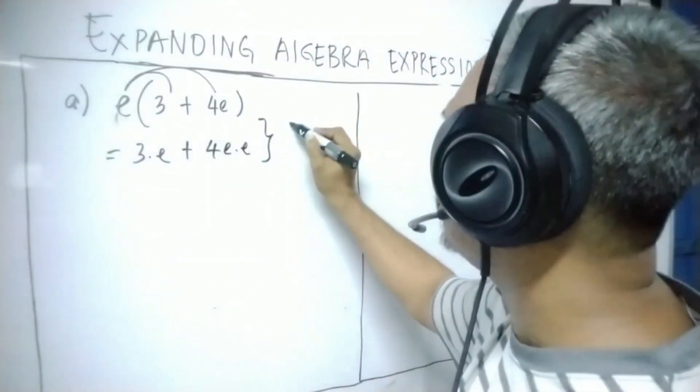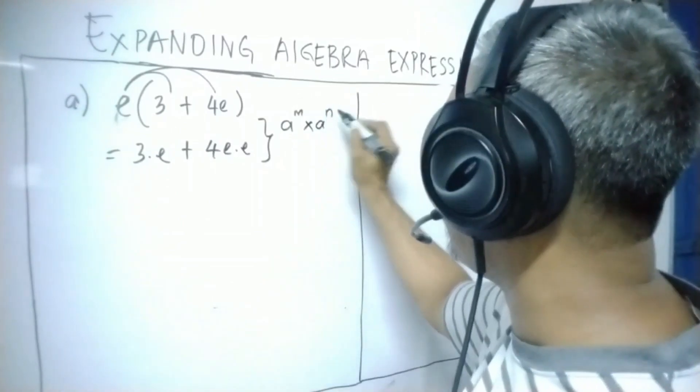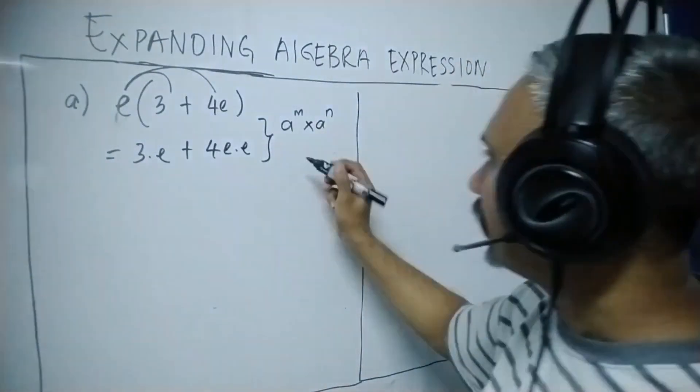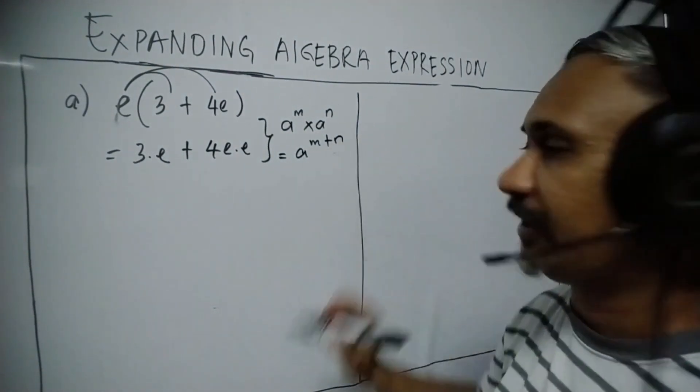Following the exponential rule A power of M times A power of N, this power we can plus when the base are the same. So it becomes A power of M plus N.